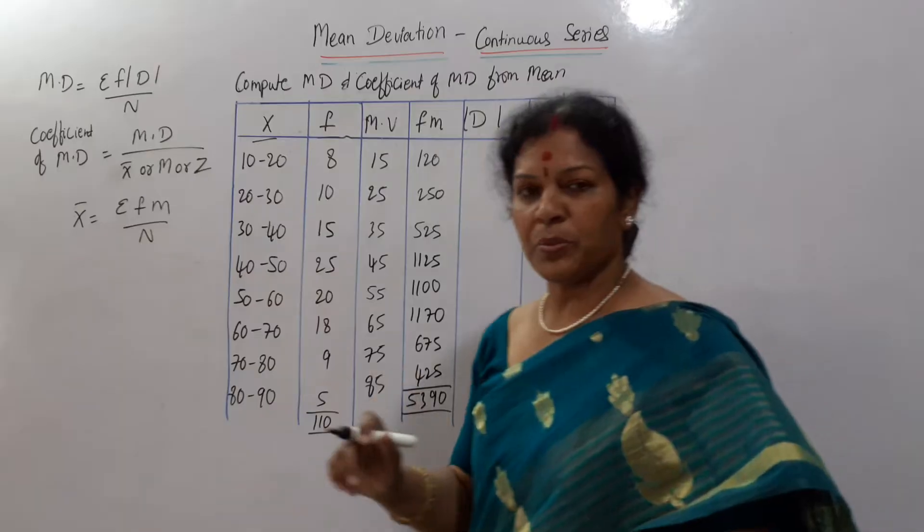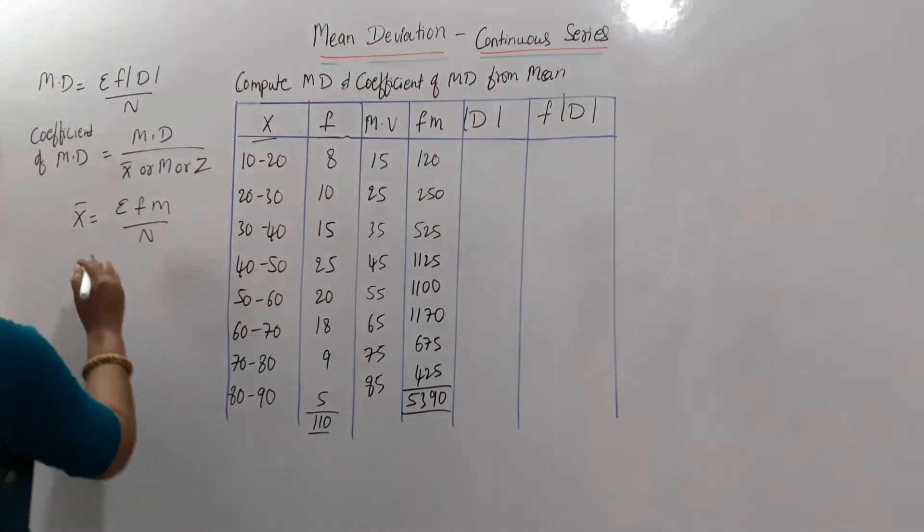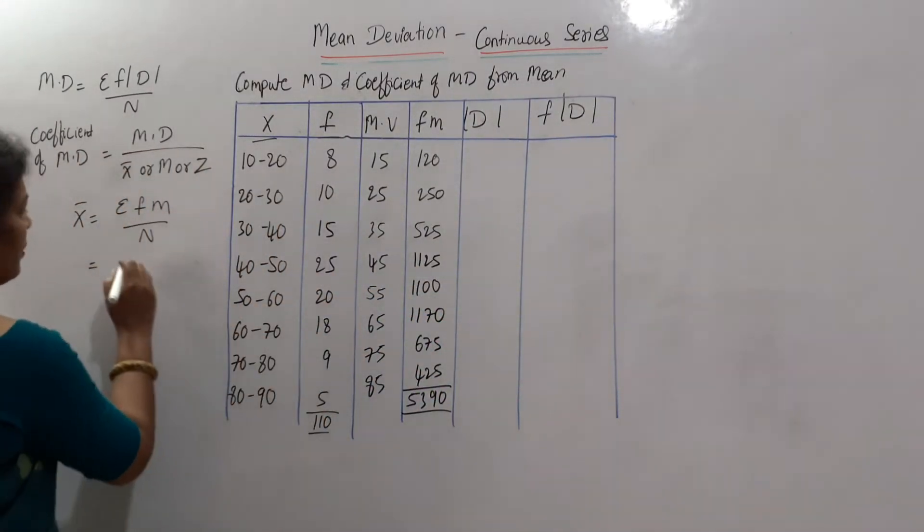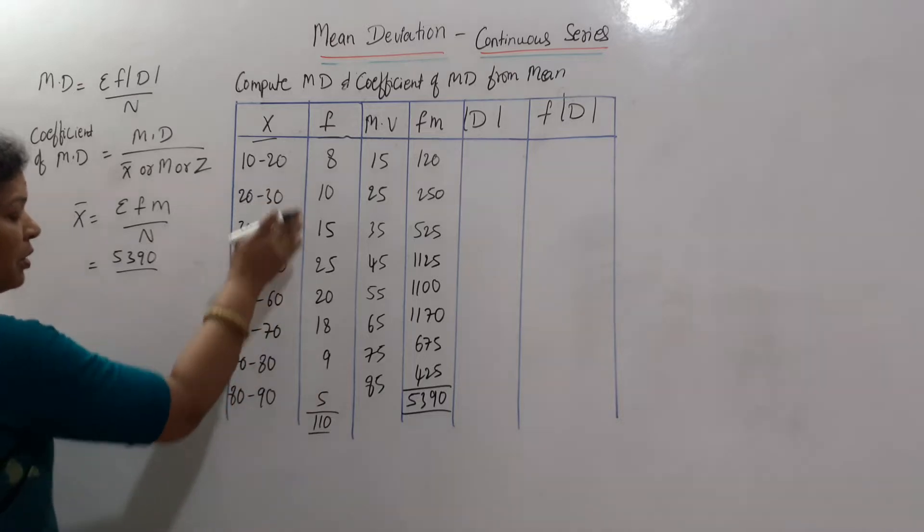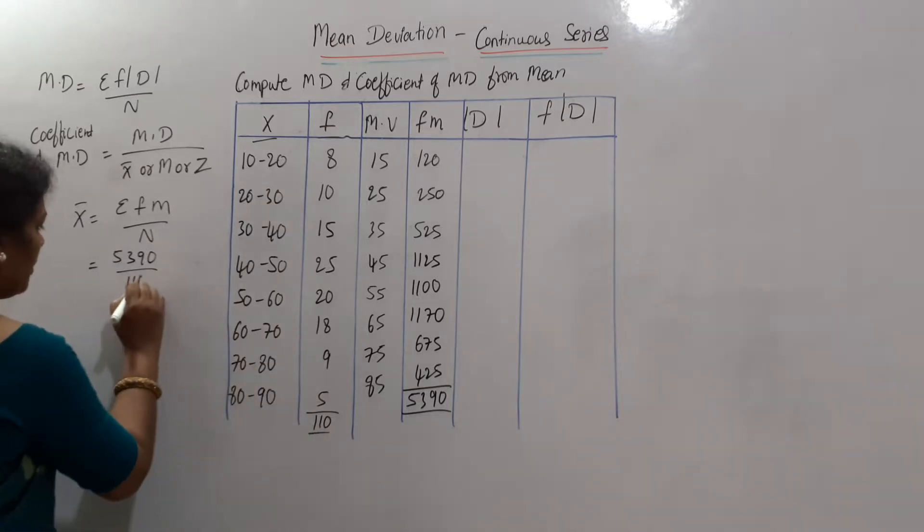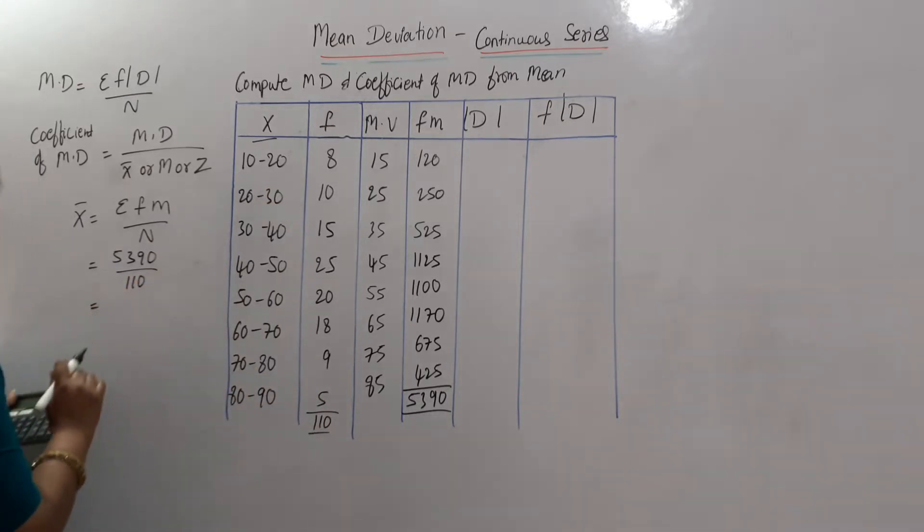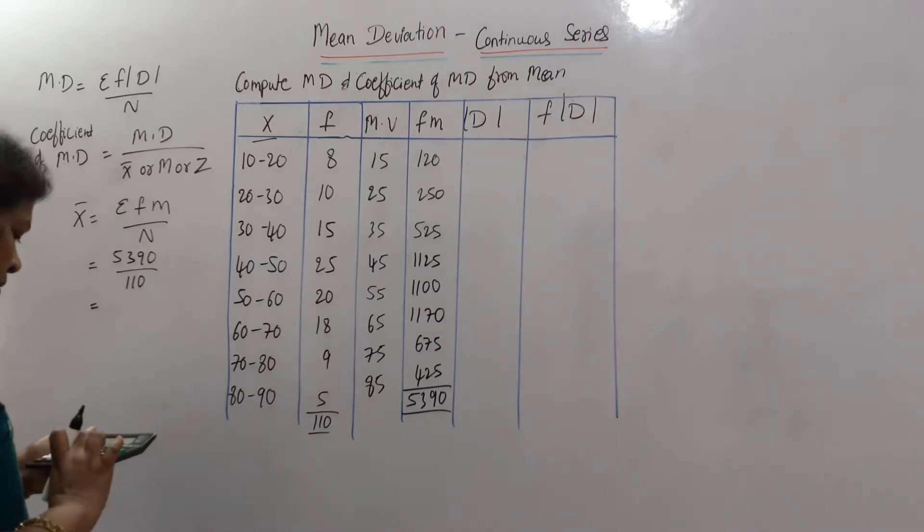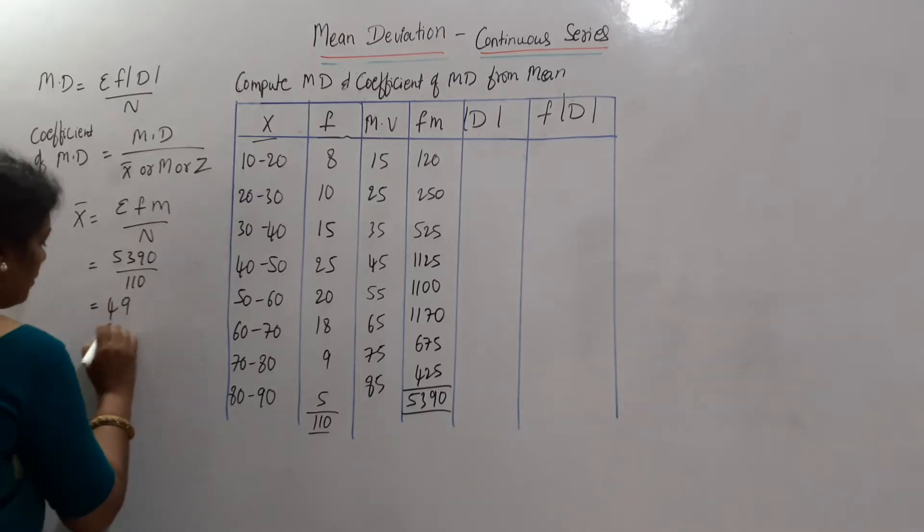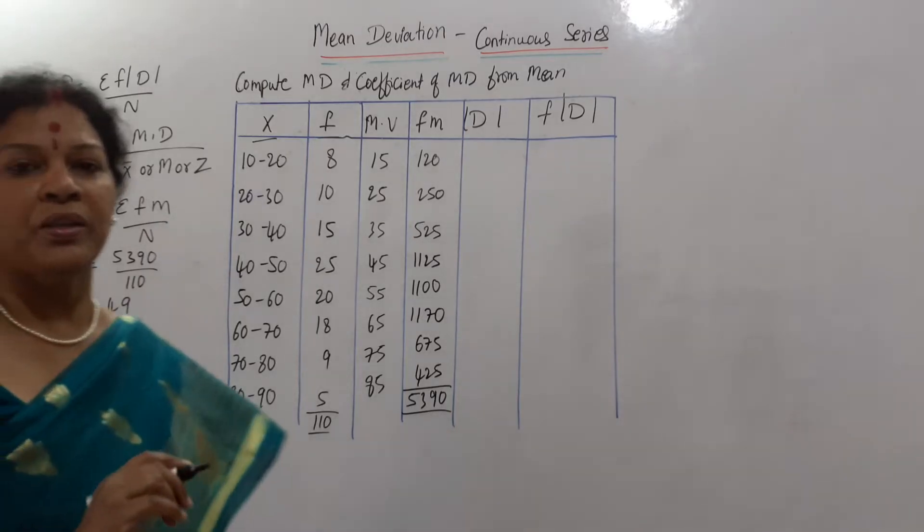So as per the formula, x bar is equal to sigma fm. Sigma fm is 5390 divided by n. N is total, total of frequency, that is 110. If you calculate divided by 110, it comes to 49.